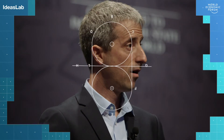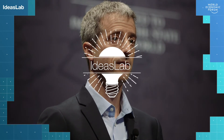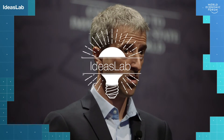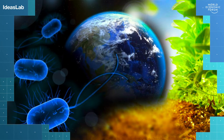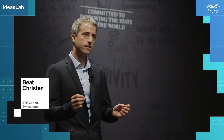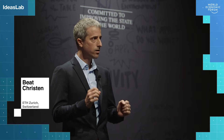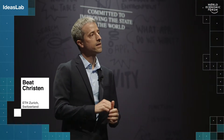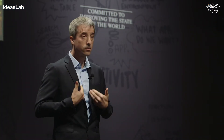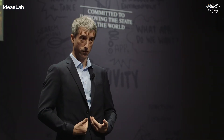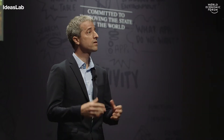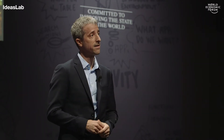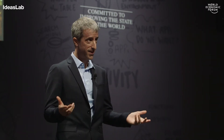Microbes are the most abundant life form on our planet and play vital roles in sustaining ecosystems. For instance, microbes can fix nitrogen for plants, help us to digest our food, they can harvest light and also remove carbon dioxide from the atmosphere.